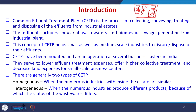The effluent taken may include industrial wastewater and domestic sewage generated from the industrial plant — both can be taken care of. This concept of CETP helps small as well as medium scale industries to discard and dispose of their effluents without much treatment. CETPs have been mounted and are in operation at several business clusters in India and worldwide. They serve to lower effluent treatment expenses, offer high collective treatment, and decrease the land expenses for small scale business centers. The industries do not have to have very large land areas for treatment of wastewater — that will be taken care of by the CETP.